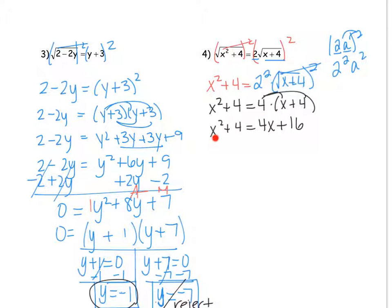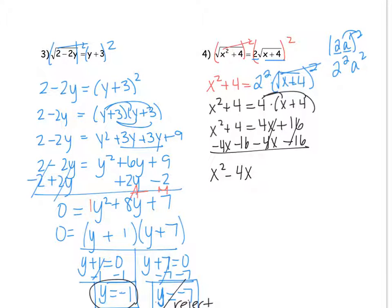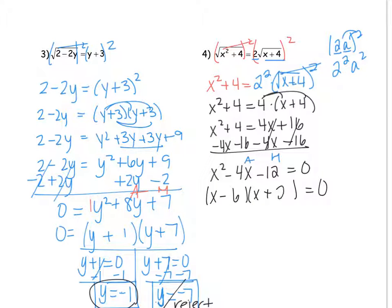Now that I have an x squared, I'm going to move everything to one side to factor and t-chart and solve. So I subtract 4x and subtract 16, giving me x squared minus 4x minus 12 equals 0 — because 4 minus 16 is negative 12. Using multiply-add: what numbers multiply to negative 12 that add to negative 4? That's x minus 6 and x plus 2, giving x equals 6 and x equals negative 2.